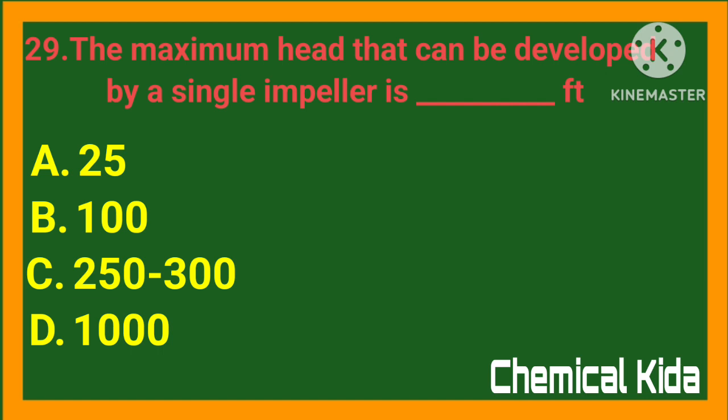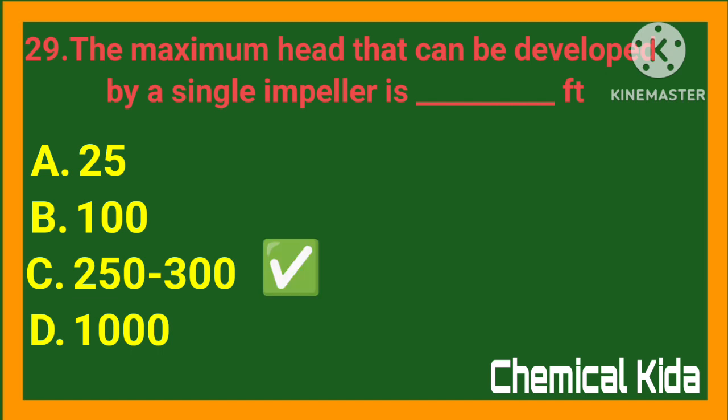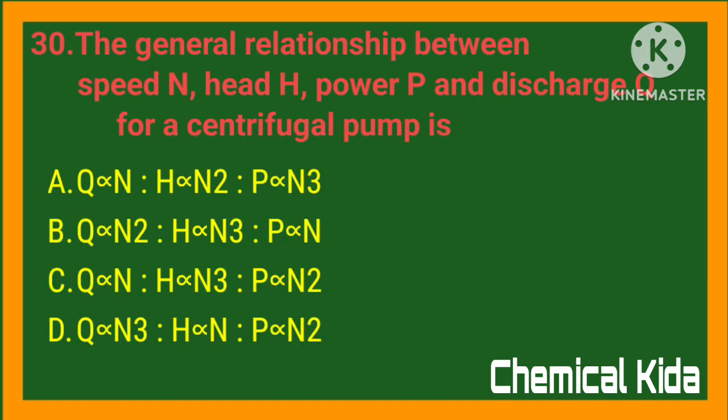The maximum head that can be developed by a single impeller is: a) 25 m, b) 100 m, c) 250 to 300 m, d) 1000 m. Answer: c) 250 to 300 m. The general relationship between speed (N), head (H), power (P), and discharge (Q) for a centrifugal pump: Q is proportional to N, H is proportional to N².